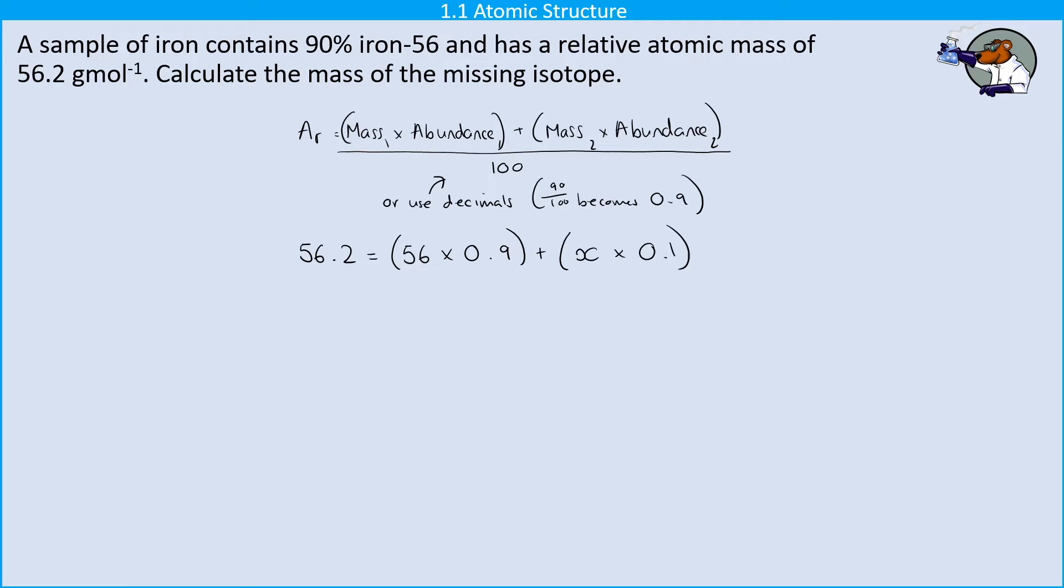I've got this relative atomic mass of 56.2. I'm told that the first isotope which has a mass of 56 has an abundance of 90 percent so personally I've gone for times 0.9 but you could do times by 90 and then divided by 100.